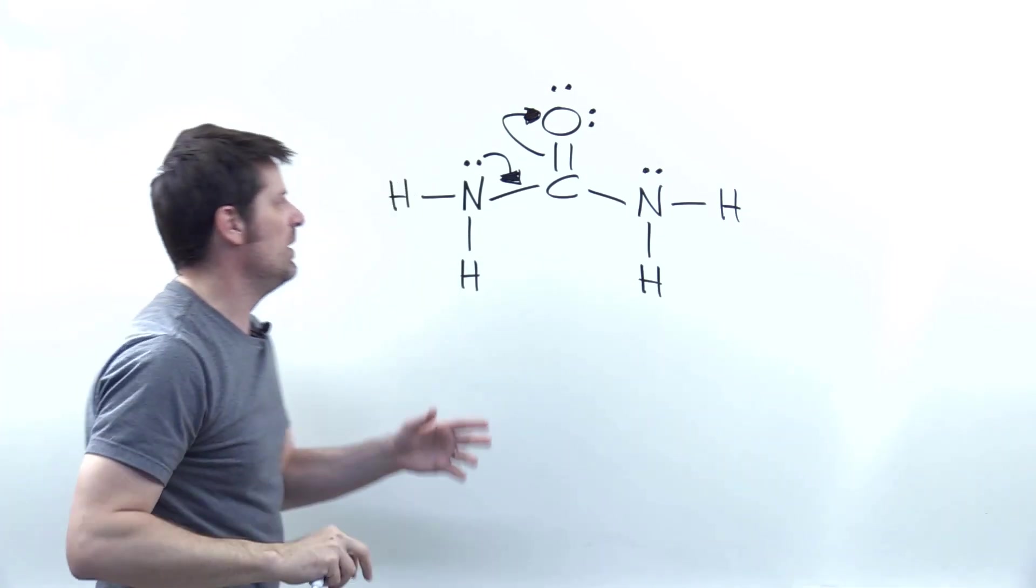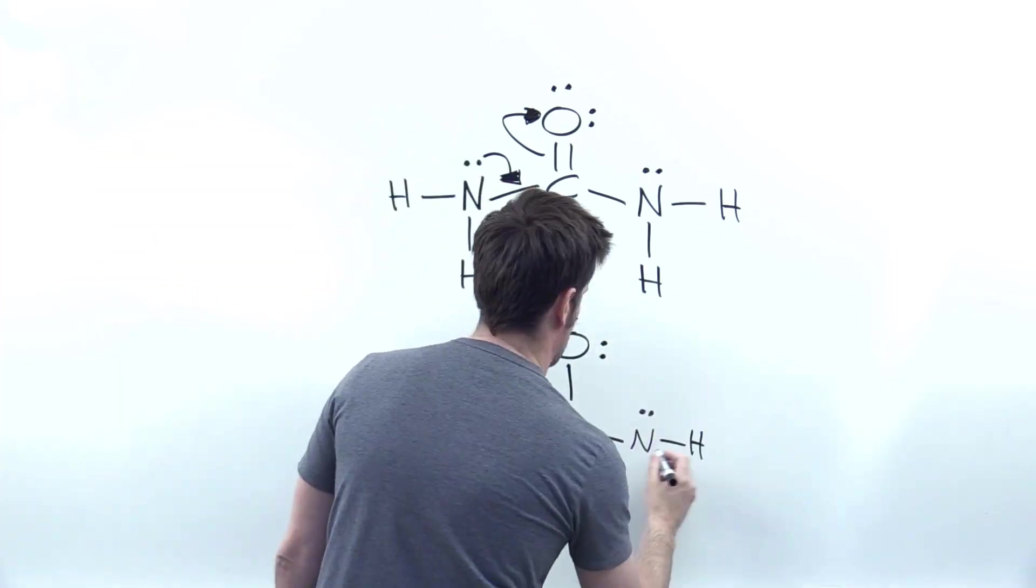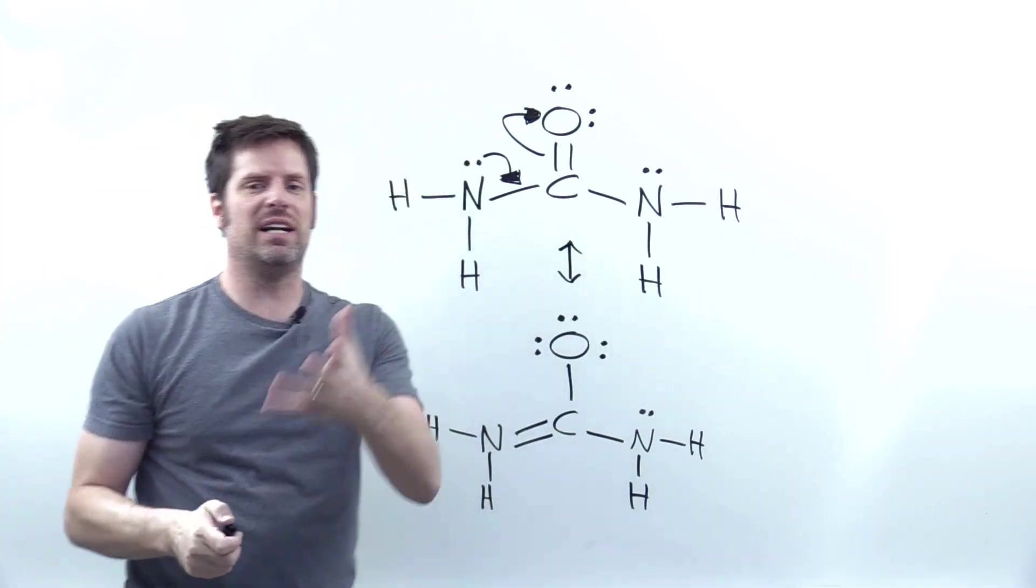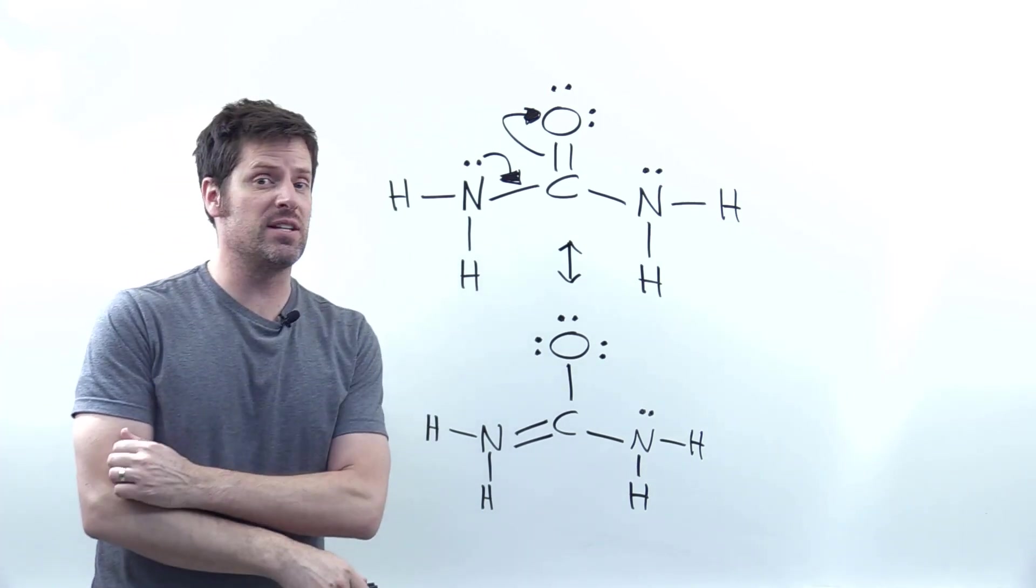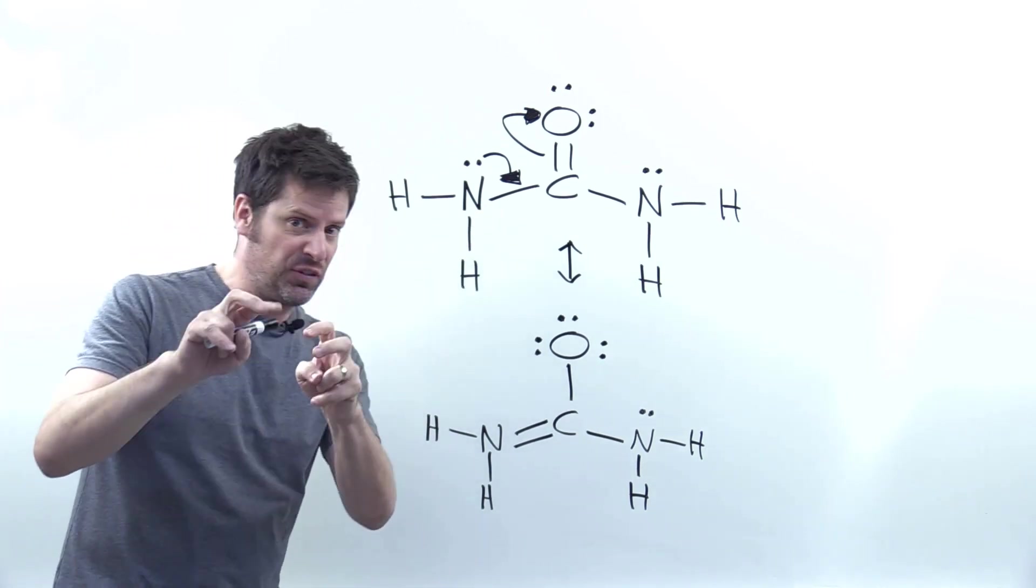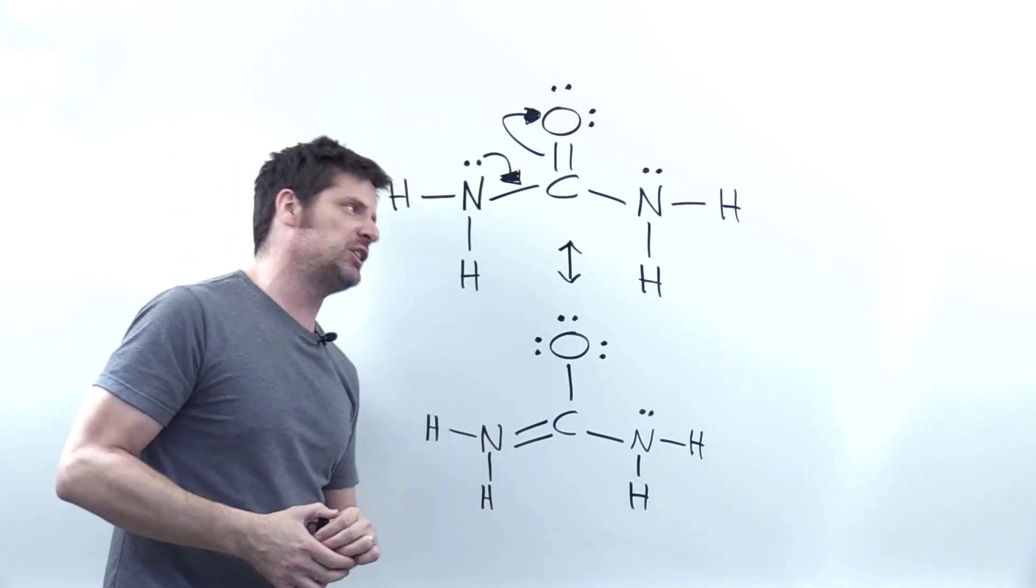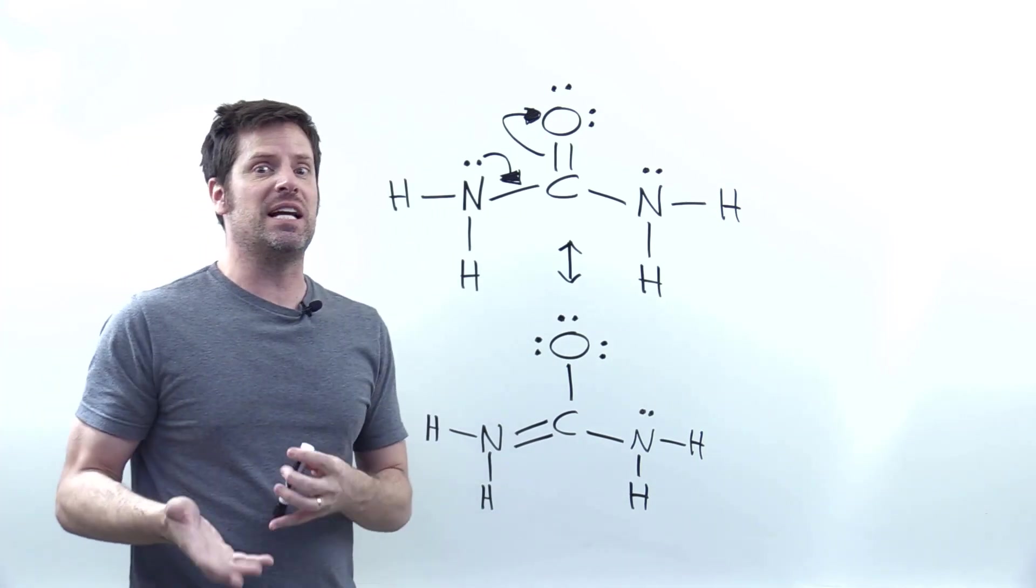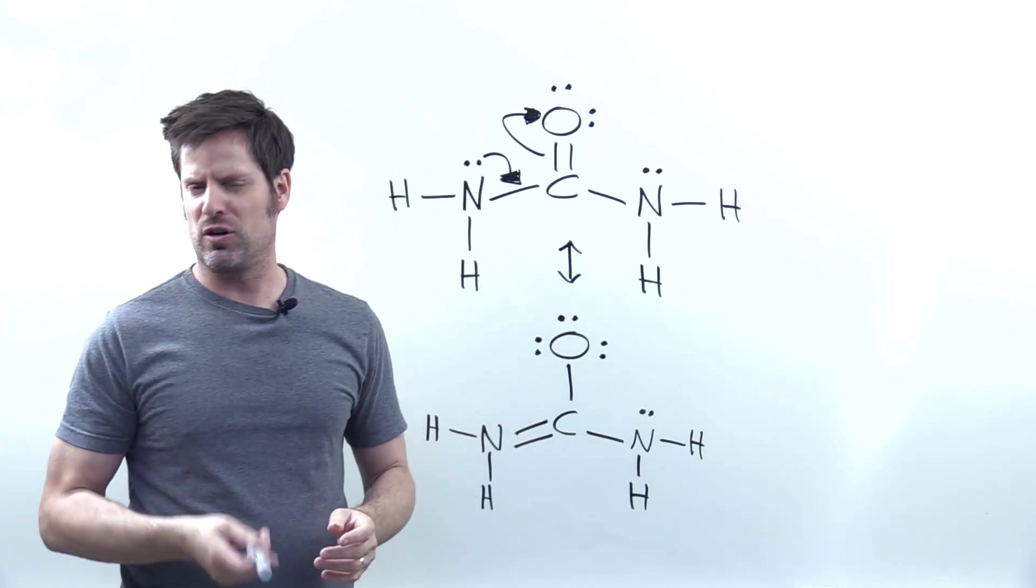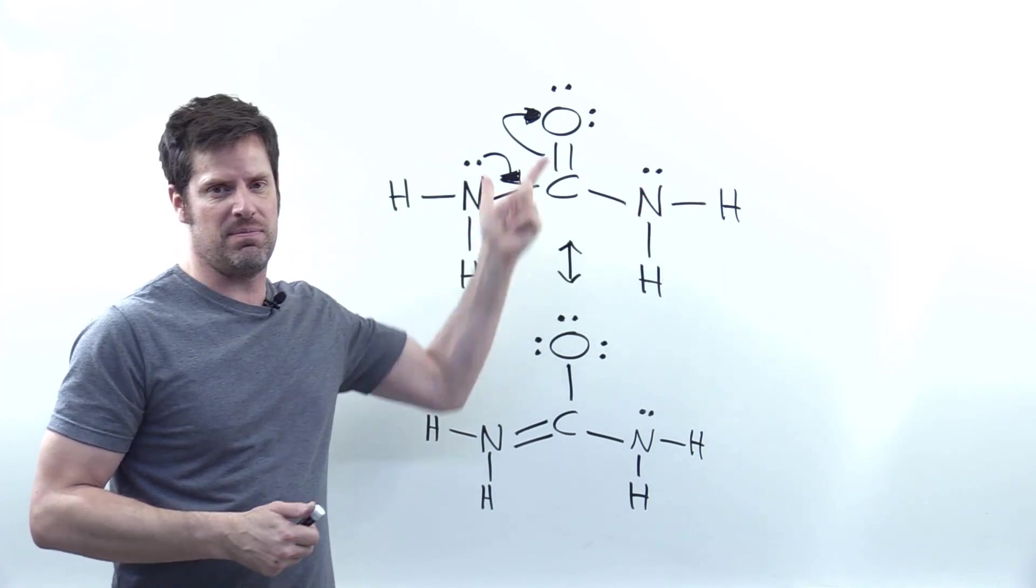Let's redraw the new molecule that is formed when we make that electron movement. This perceived movement of electrons is what we call resonance, or resonance delocalization. And each of these different molecules are called resonance contributors. Now, in reality, the actual molecule exists somewhere in between these two, as well as all of the potential reasonable resonance contributors you could think of, such as ones coming from the nitrogen over here doing the same thing.